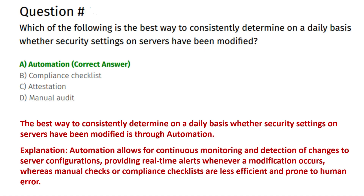Which of the following is the best way to consistently determine on a daily basis whether security settings on servers have been modified? Option A: automation. Option B: compliance checklist. Option C: attestation. Option D: manual audit.